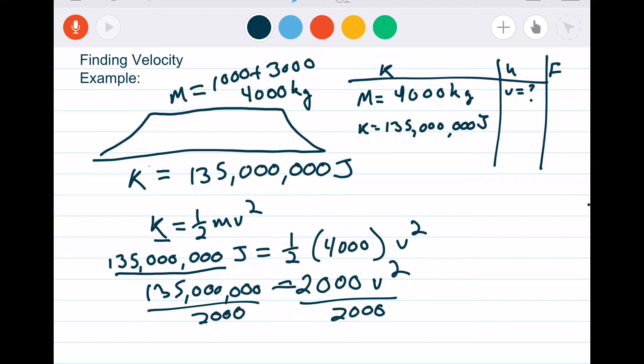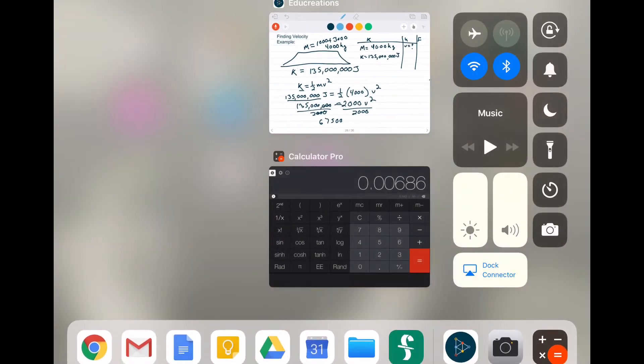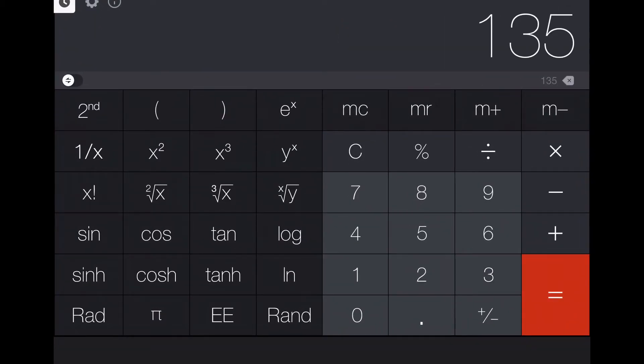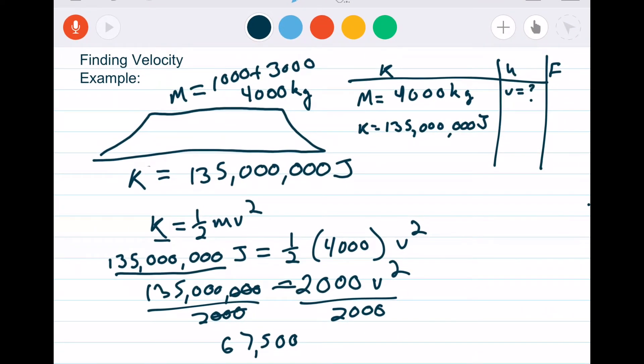Which means we're going to get 67.50 and a bunch of zeros. Let's check our calculator. So 135 million divided by 2,000: 67,500. But that's still equal to v². We're not looking for v², we're looking for v. So I have to square root both sides.